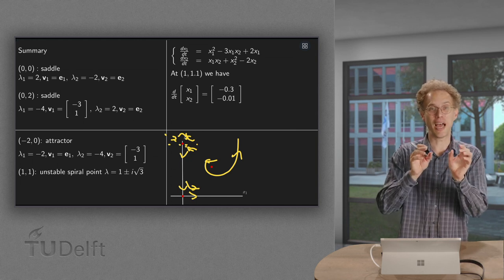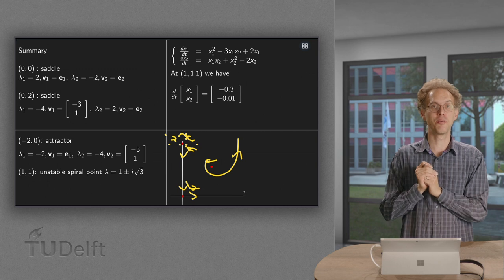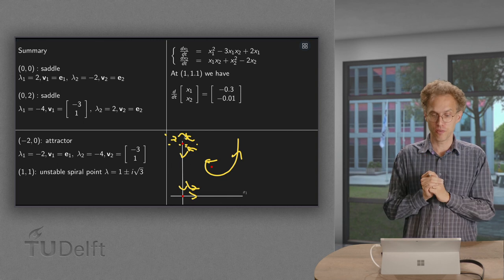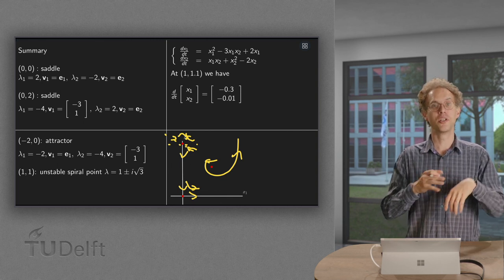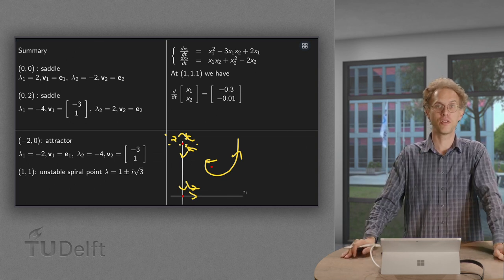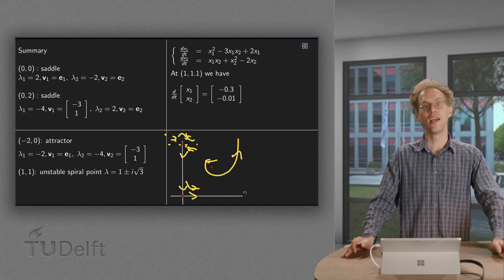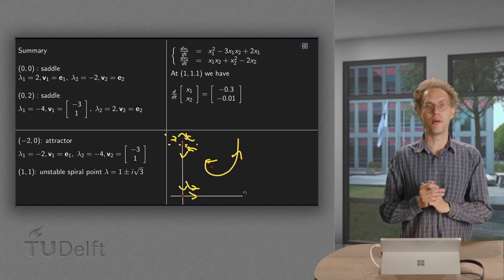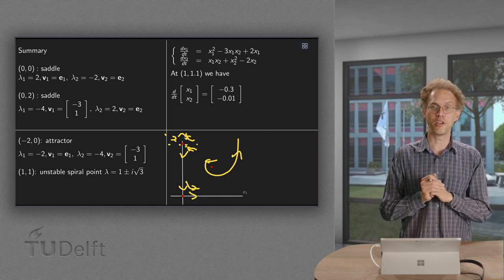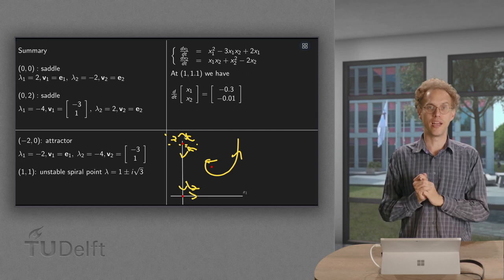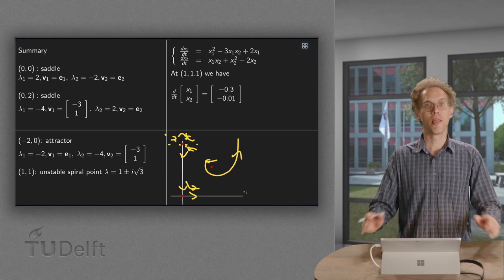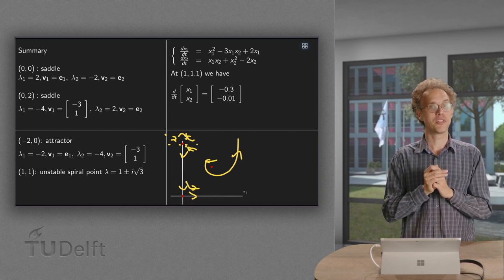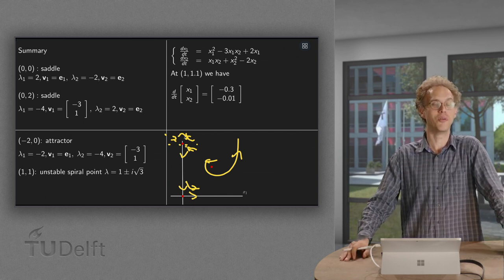We only know exactly what happens close to our equilibrium points. So here I cannot draw the full phase space. We know what's going on around the equilibrium points. But that already gives us a lot of information what's happening qualitatively. And of course if you want to draw the full phase space you better use a computer algebra package which gives you all the direction arrows. But for the analysis we like to look at what happens at the equilibrium points and now you know how to do that.